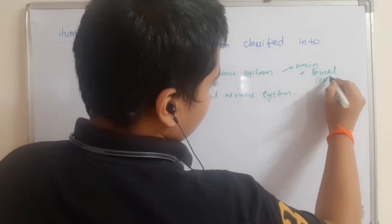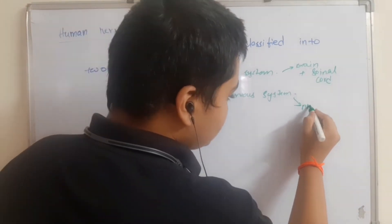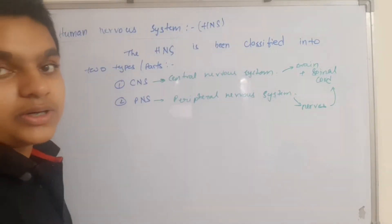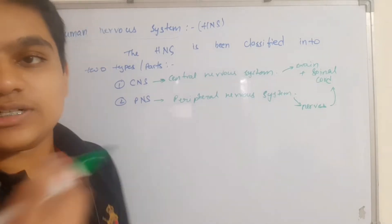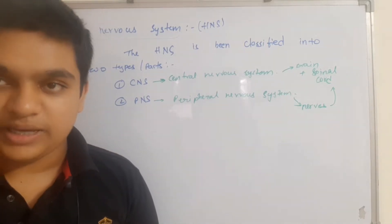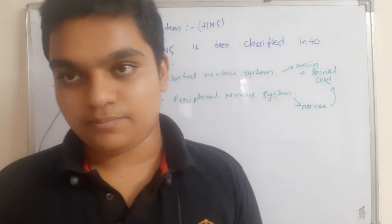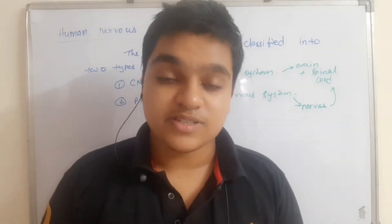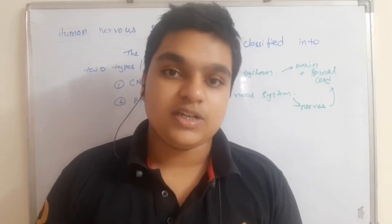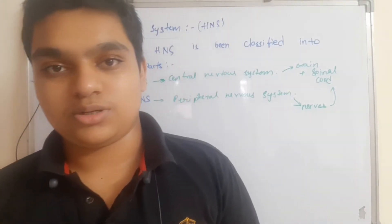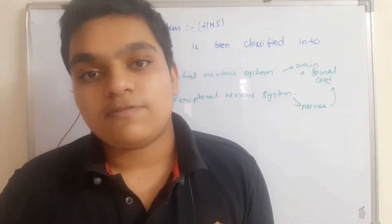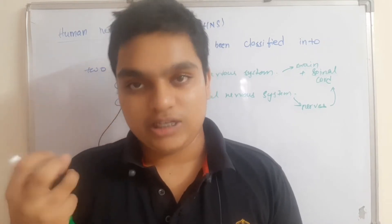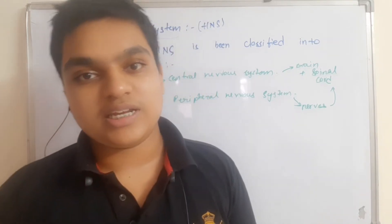If you consider the CNS as the main supply — like the electricity main switch, the MCB — then the PNS would be your electrical wires, and the light and fans would be your body parts. Remember it like that and you will find it very easy. That is about CNS and PNS.